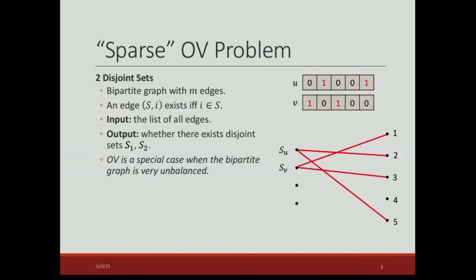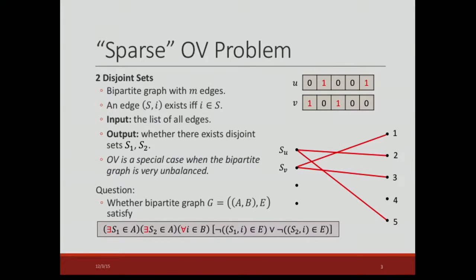Orthogonal vectors is a special case of the two disjoint sets problem where the bipartite graph is very unbalanced — the right side is logarithmically small compared to the left side. Our question is to decide whether the bipartite graph satisfies the logic formula: there exists a set S1, there exists a set S2, such that for all elements, the element is either not contained in S1 or not contained in S2.